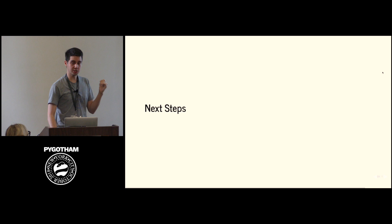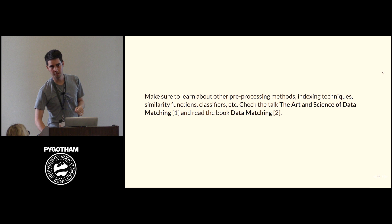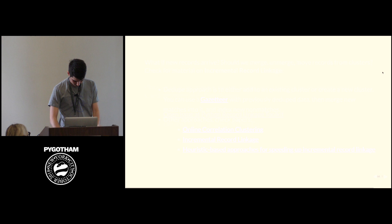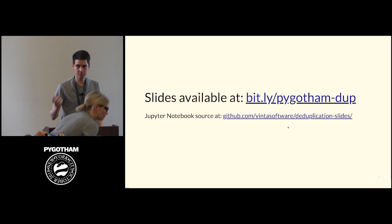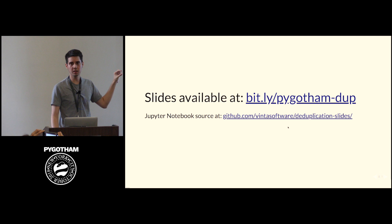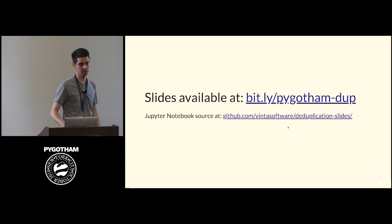And that's it. You can check the next steps and more resources on the slides. The slides and Jupyter Notebook source are available at the provided links. There's also a Binder link, so you don't even have to install anything on your machine — just click the Binder link and you have a Jupyter notebook running online with all this code. Thank you very much.